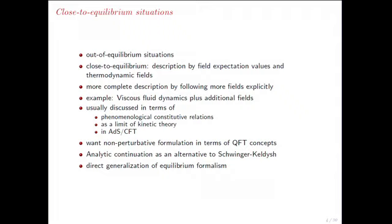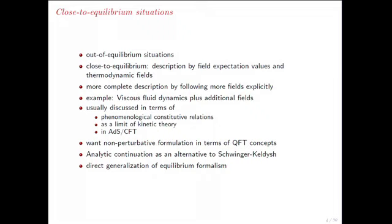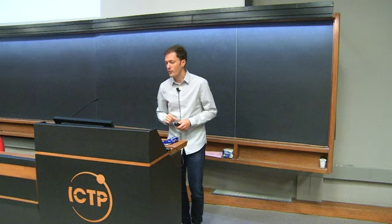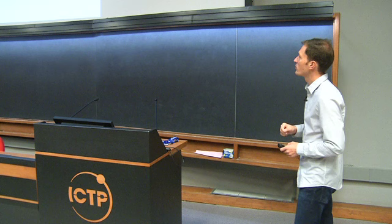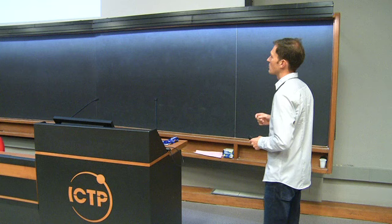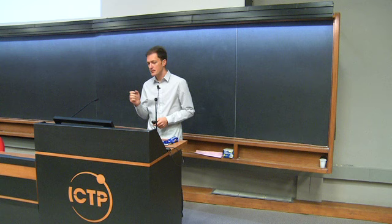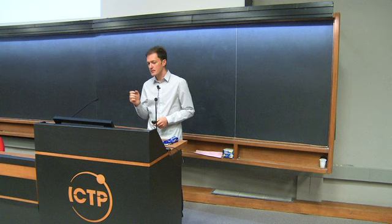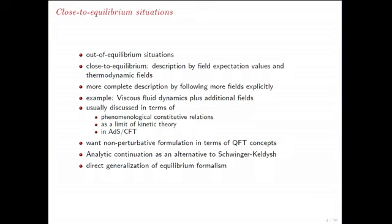What I want to explore is a close-to-equilibrium formalism — not describing arbitrary far-from-equilibrium situations, but situations deviating from equilibrium in a way still accessible by extending the equilibrium formalism. One example is viscous fluid dynamics as a local equilibrium approximation, possibly with additional order parameter fields. Usually this is discussed in terms of phenomenological constitutive relations, kinetic theory, or AdS-CFT, but I will derive a formalism directly based on quantum field theory concepts, using analytic continuation as an alternative to Schwinger-Keldysh — a direct generalization of the equilibrium formalism.